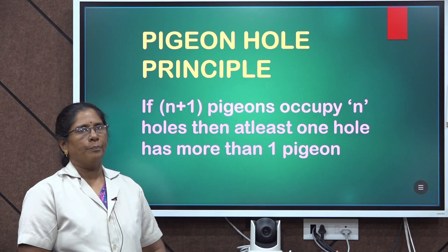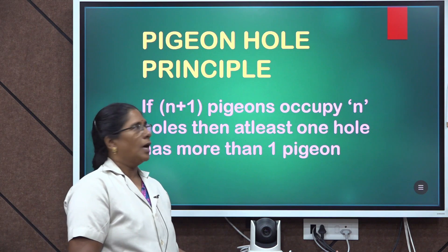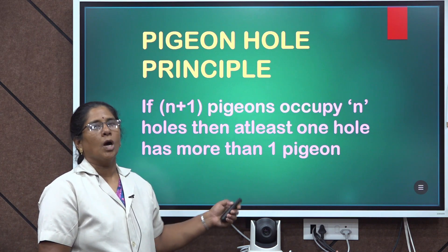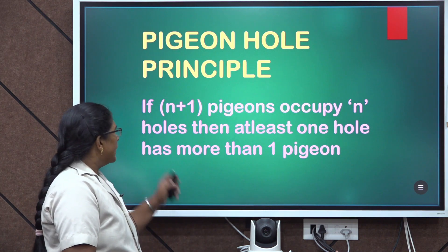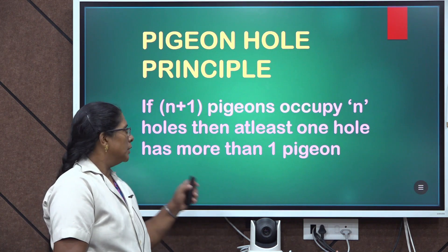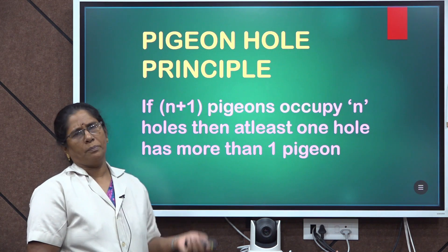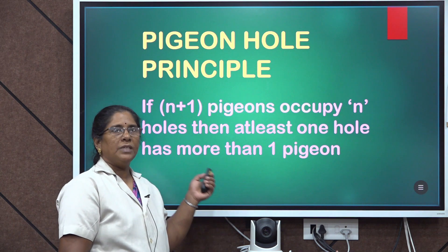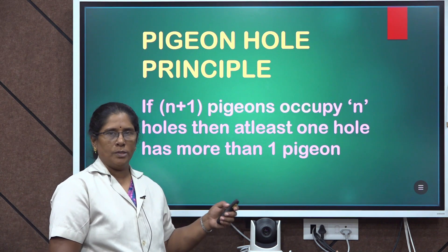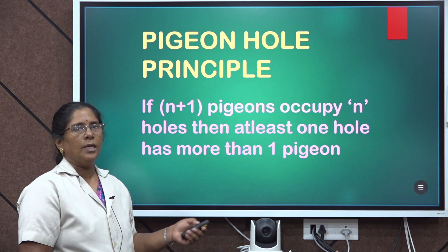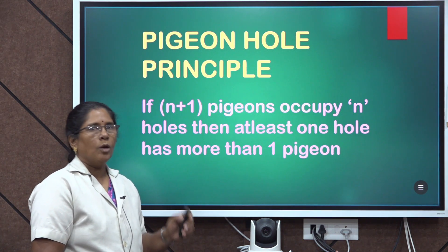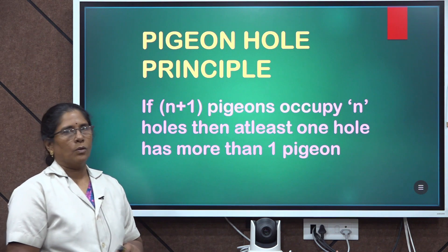Now let us see what the Pigeonhole Principle is. Actually, the Pigeonhole Principle states that if n plus 1 pigeons occupy n holes, then at least one of the holes has more than one pigeon. It means that if the number of pigeons is more than the number of holes, then quite obviously one of the holes must contain more than one pigeon.